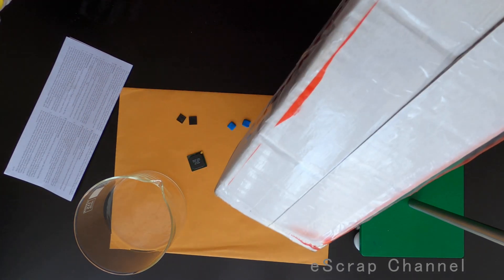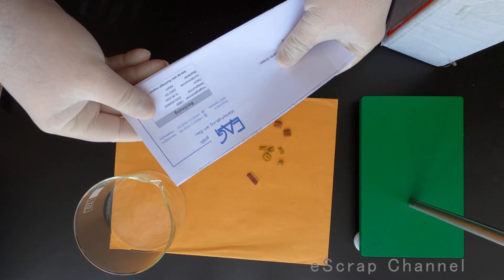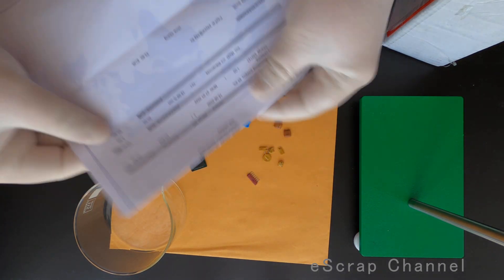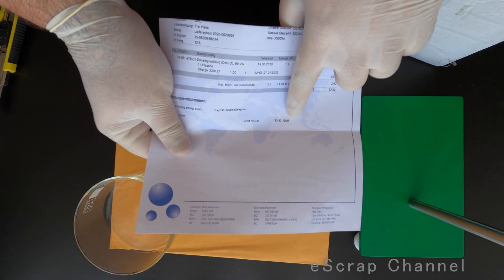DMSO. So I bought one bottle from Germany. That's the shipment documentation and that's the price. It's one liter, 23.80 euro.